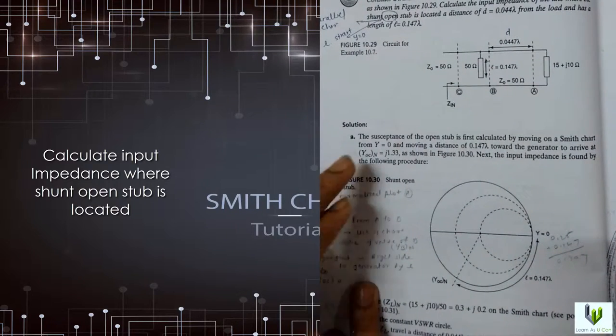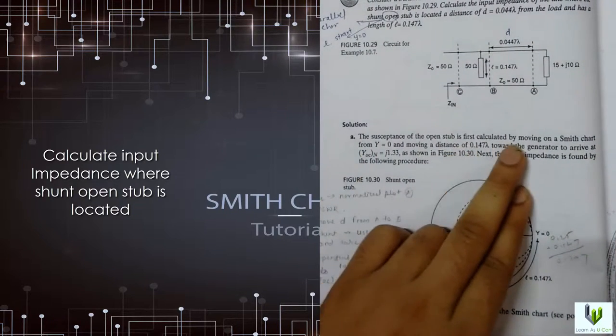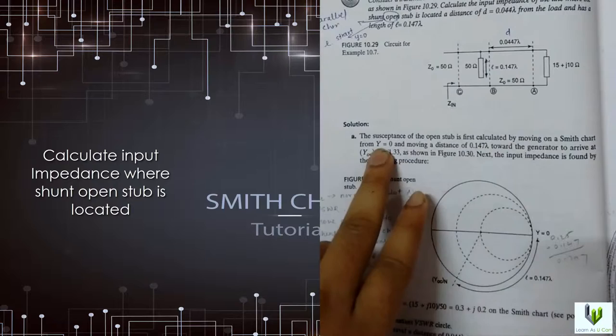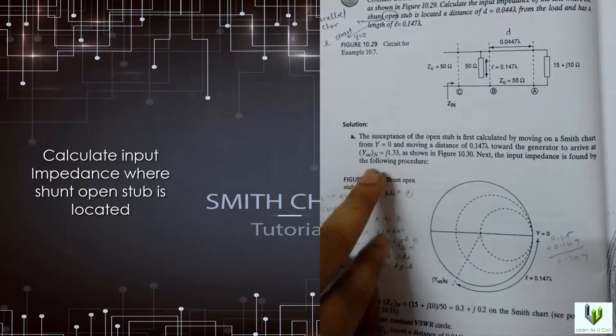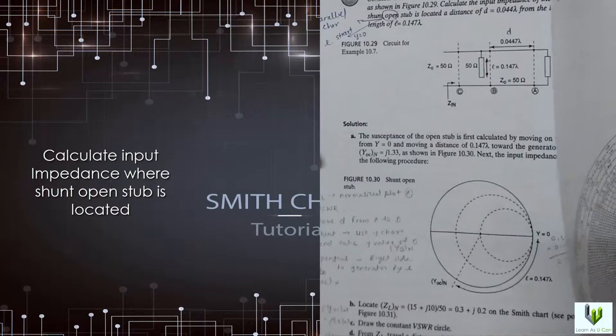The susceptance of the open stub is first calculated by Smith Chart. Y is equal to 0, YOC we have to calculate Y open circuit, so just plot this.